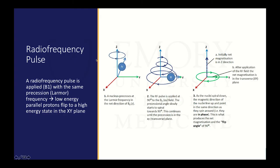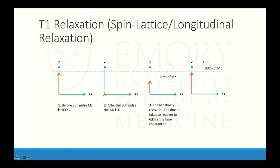This is the sequence of events: you have your hydrogen atom precessing in the Z-axis where your magnetic field is pointing, and then you apply a radiofrequency pulse at the same Larmor frequency — the same precession frequency — which causes it to go from a low-energy state to a high-energy state. The hydrogen atom is then spinning in a transverse axis, and as it starts to relax, it releases energy and goes back to its low-energy state. This leads us to T1 and T2 relaxation.